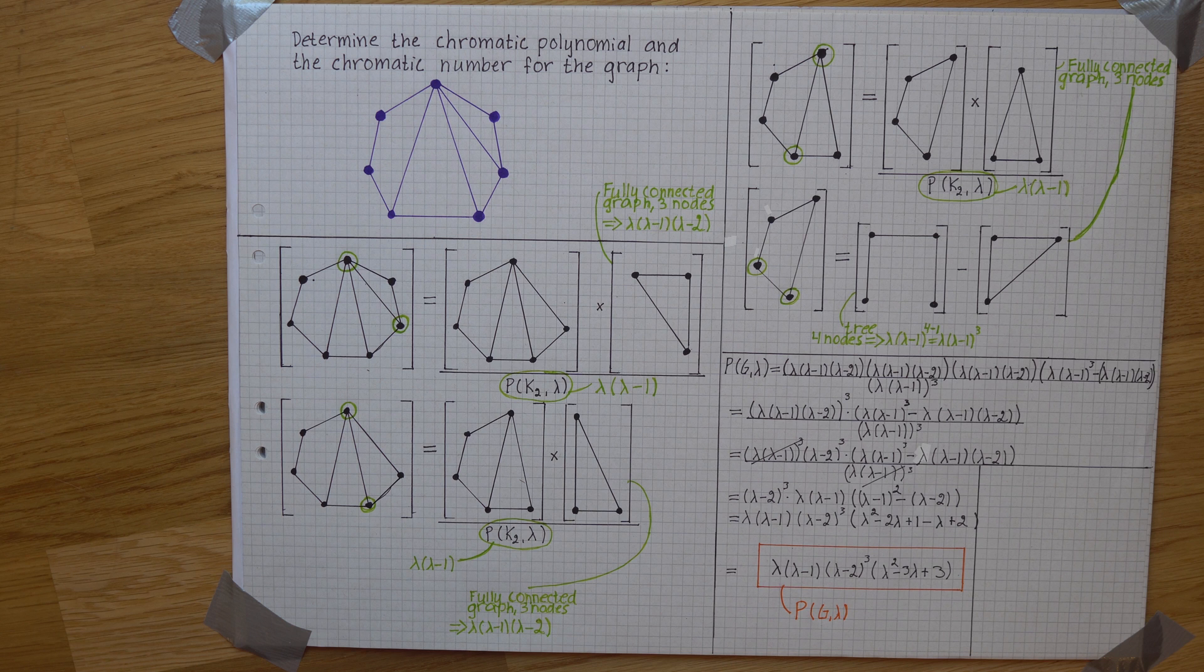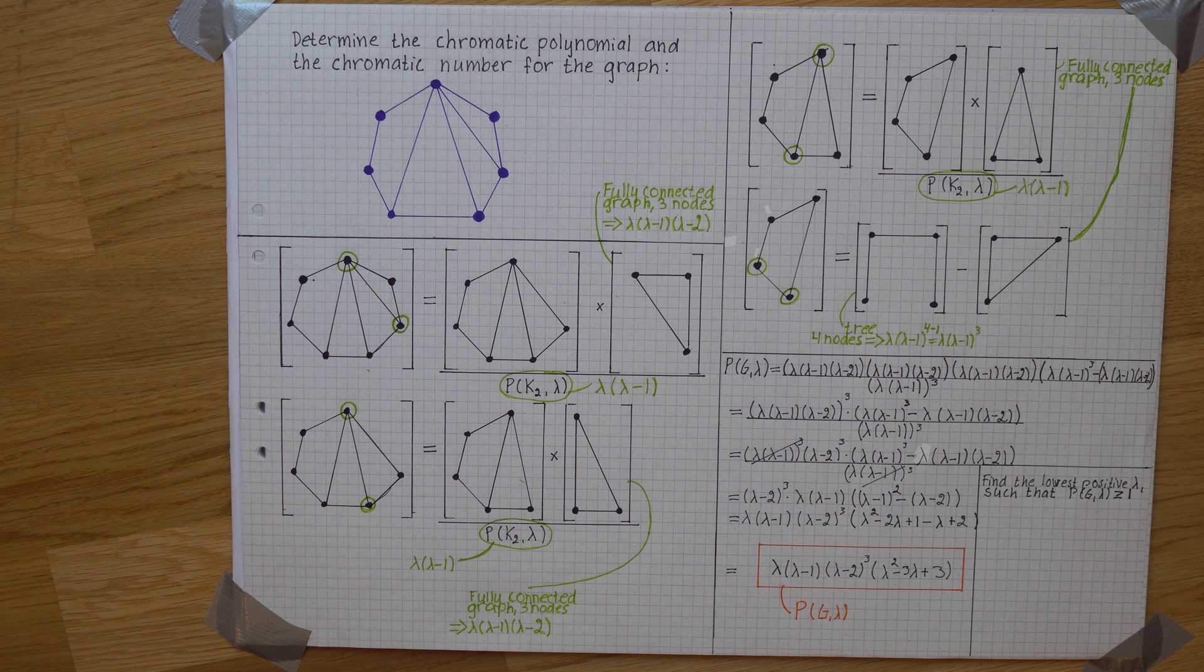From the chromatic polynomial, we can then derive the chromatic number by finding the lowest positive lambda such that it is equal to or greater than 1.